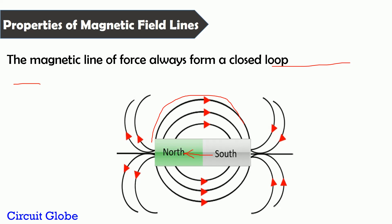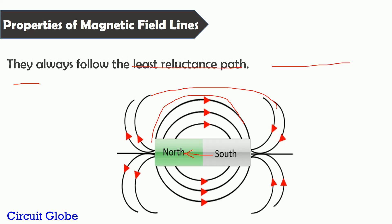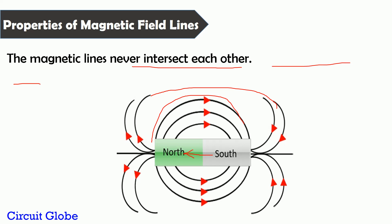The third property of the magnetic field lines is that they always try to follow the least reluctance path. The fourth property is that these lines never intersect each other. As you can see, the lines emerge from the north pole and end at the south pole, but they never intersect — they always try to repel each other.